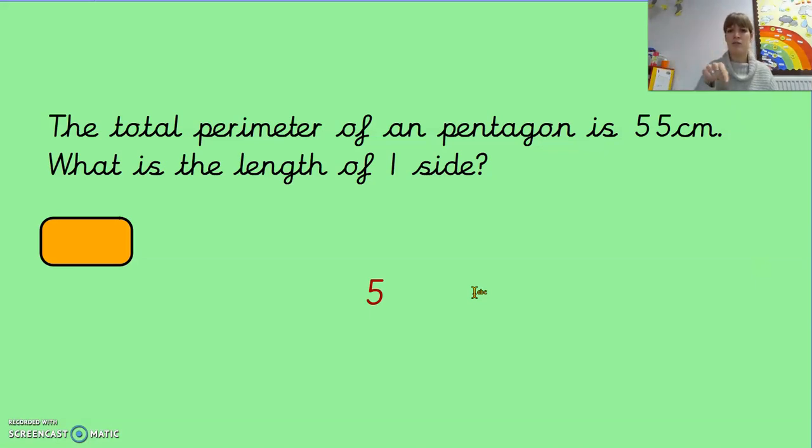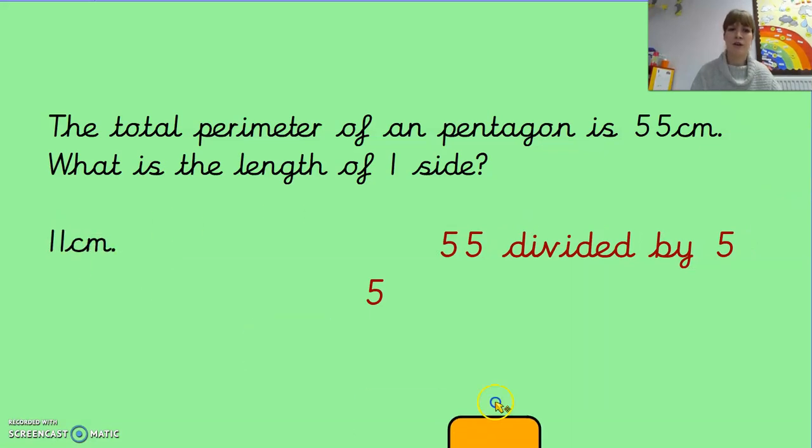And the total perimeter of this pentagon is 55 centimetres and we know the perimeter is around all the outside of the shape. So what I need to do here is 55 divided by five because pentagon is a five-sided shape. So 55 divided by five equals 11 centimetres. So one side of the pentagon is 11 centimetres. Well done if you've got that correct and gave that a go.